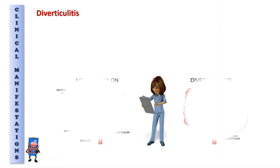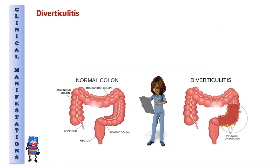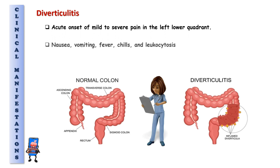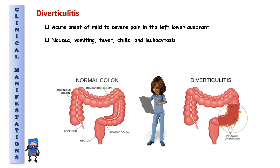Diverticulitis: Acute onset of mild to severe pain in the left lower quadrant. Nausea, vomiting, fever, chills, and leukocytosis.